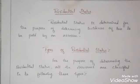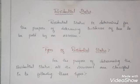Determining residential status becomes necessary so as to decide whether tax should be collected from him or not, or to decide the incidence of taxes. An assessee is classified in four categories: an individual, HUF (Hindu Undivided Family), a firm, and a company. Finding the residential status of all these assessees is very necessary.